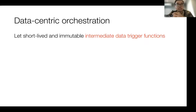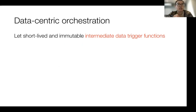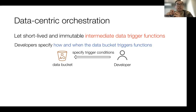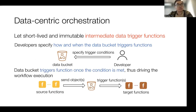We notice that the intermediate data in workflow execution are typically short-lived and immutable — once they are generated, they are waiting to be consumed by downstream functions. So in data-centric orchestration, we let the intermediate data trigger the functions. In particular, we have an abstraction called a data bucket for storing and managing intermediate data. Users can specify how and when the data bucket should trigger functions by specifying trigger conditions. During execution, the data bucket triggers the function once the condition is met. A serverless workflow can consist of multiple data buckets that work together to drive the workflow execution.